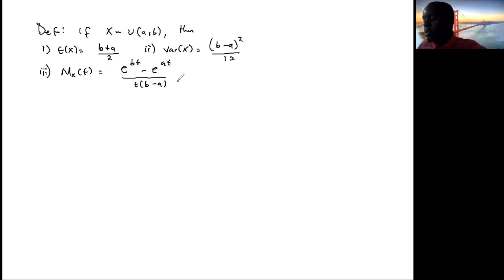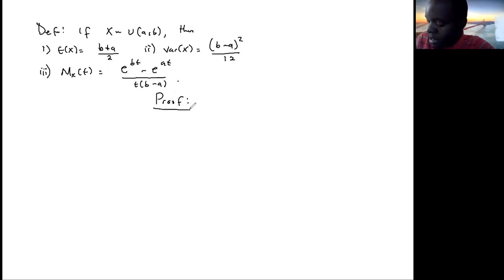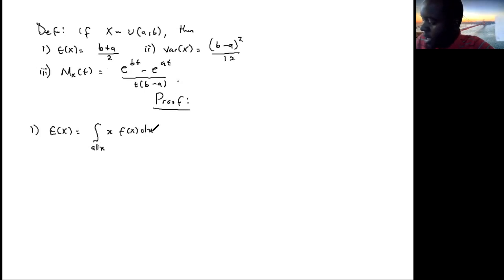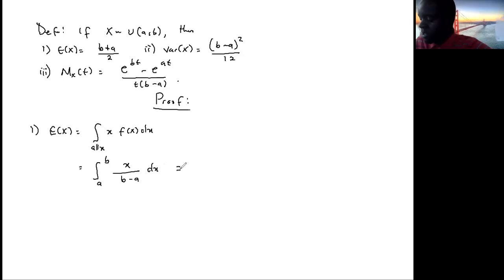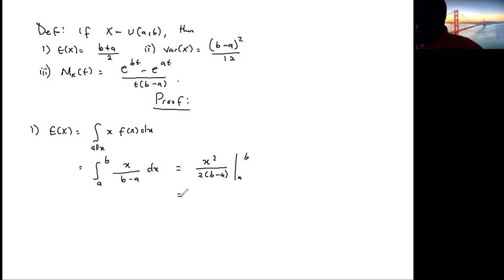You might be asked to prove these, so let's derive the expectation. By definition, the expectation is the integral over all x of x multiplied by f(x) dx. Substituting our function, this is the integral from a to b of x over (b minus a) dx. When you integrate, you get x squared over 2(b minus a) evaluated from a to b, which becomes b squared over 2(b minus a) minus a squared over 2(b minus a).